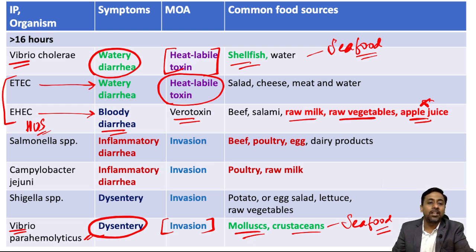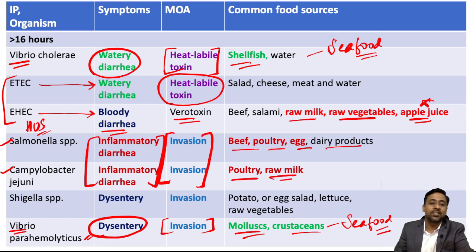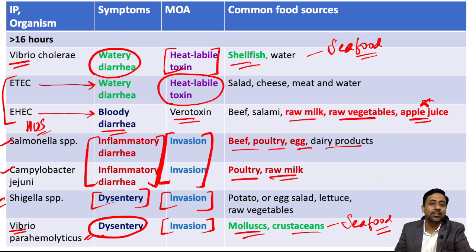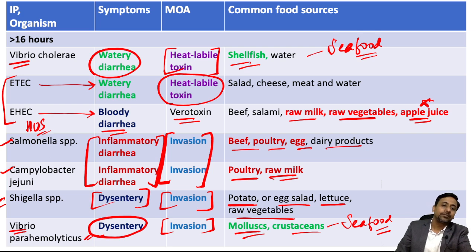For Salmonella and Campylobacter jejuni, the symptoms are similar — inflammatory diarrhea — and the mechanism is invasion. The foods are also similar: beef, poultry, egg, and dairy products, with poultry and raw milk commonly seen for both. Shigella also uses invasion as its mechanism, but it leads to dysentery — bacillary dysentery. Foods responsible for Shigella are potato, egg salad, lettuce, and raw vegetables.